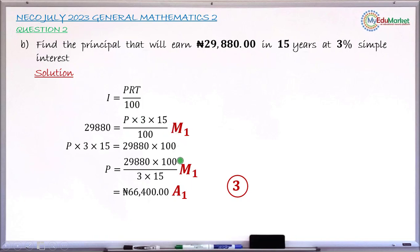The next mark is another method 1 mark for attempting to find P—that is, cross multiplying and dividing both sides by the coefficient of P. When you get 66,400 Naira correctly, you have accuracy 1 mark. That gives you 3 marks total for this question.